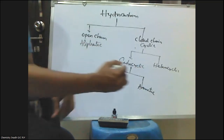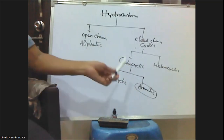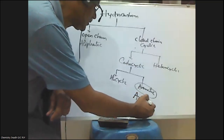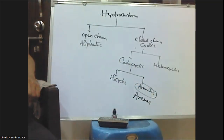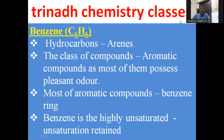We are discussing aromatic hydrocarbons. These aromatic hydrocarbons are also known as arenes. This class of compounds was named aromatic compounds because most of them possess a pleasant odor.